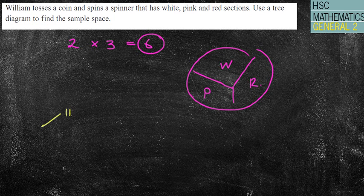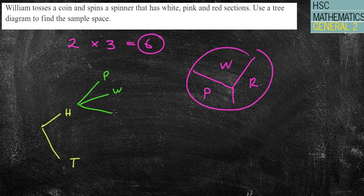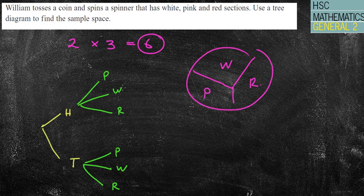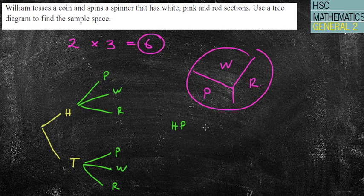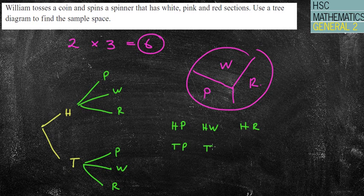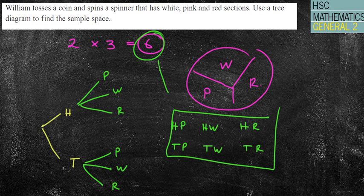So for my coin, I've got a head or I've got a tail. For my spinner, I've got pink, I've got white, and I've got red. Pink, white, and red. It's a good idea to, when you're doing your tree diagram, keep the options the same. Pink, white, red. Don't then switch around and go white, red, pink. Just keep it the same.